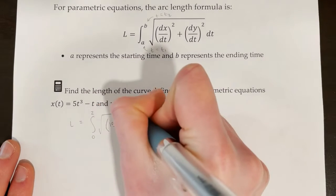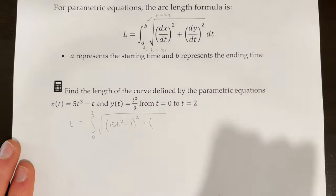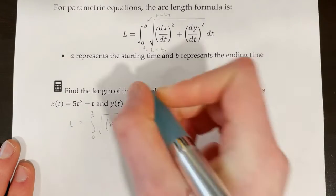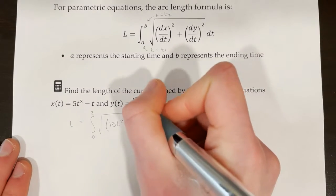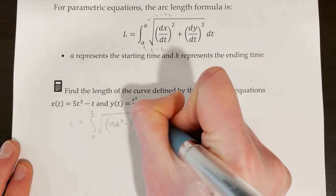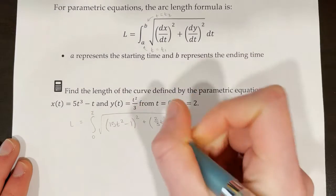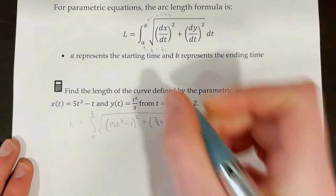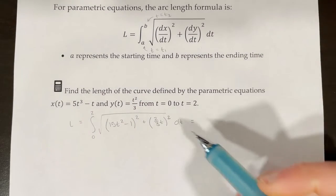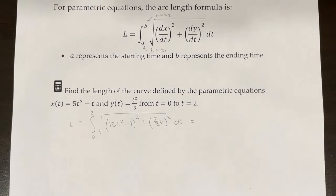That's our (dx/dt)² term. For dy/dt, the derivative of t²/3 is (2/3)t. We square that as well, giving us (dy/dt)², and we stick a dt on the end of the entire integral. Then we bring up the graphing calculator, which will give us a numerical answer.